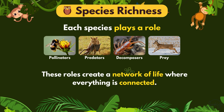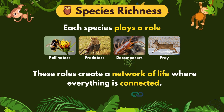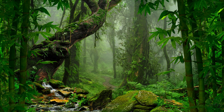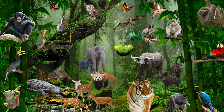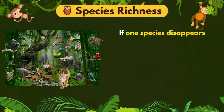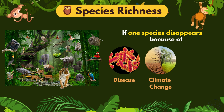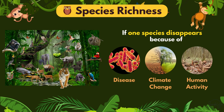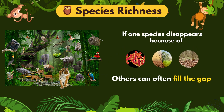These roles create a network of life where everything is connected. When an area has high species richness, it becomes more stable and more productive. If one species disappears because of disease, climate change, or human activity, others can often fill the gap.